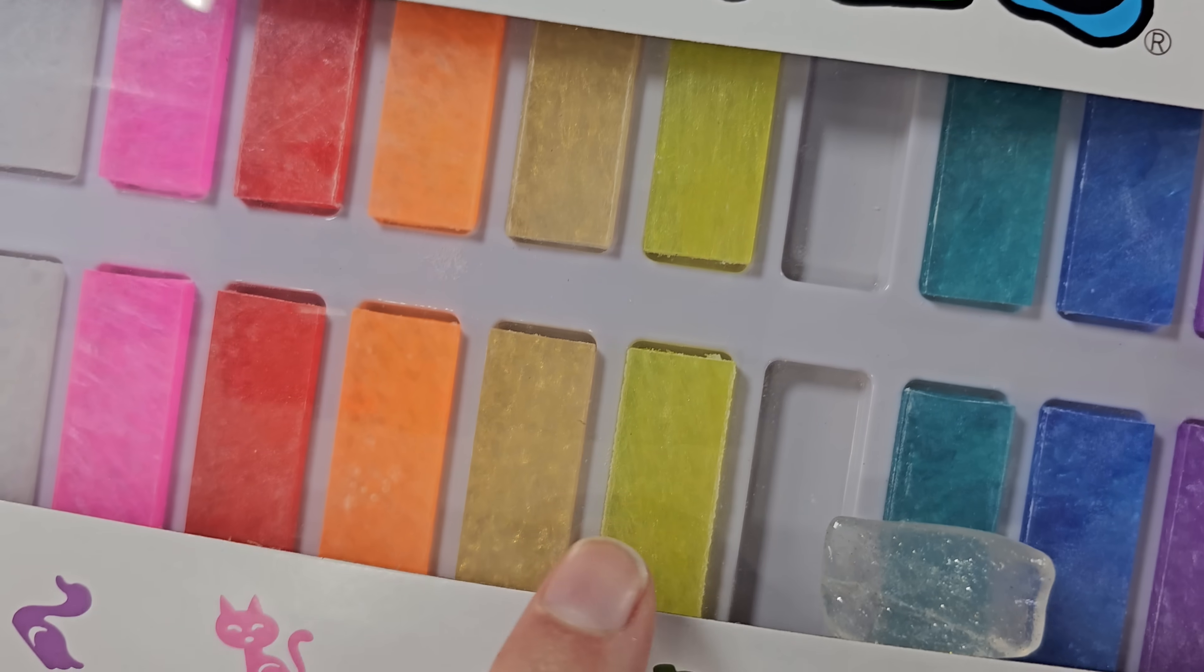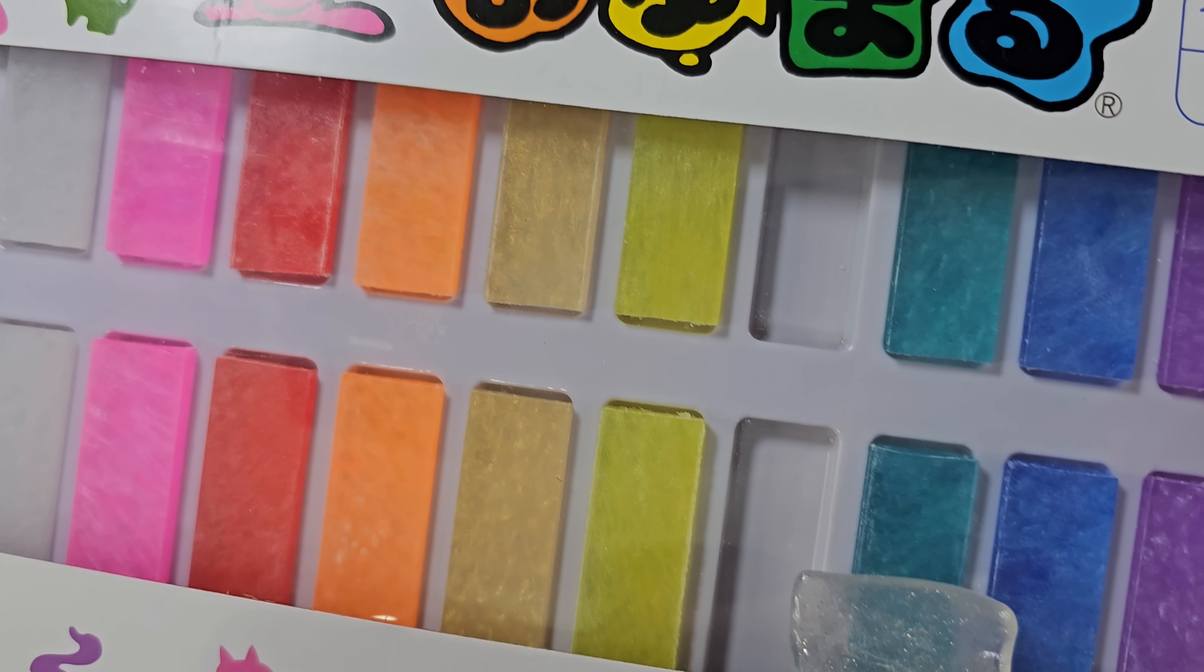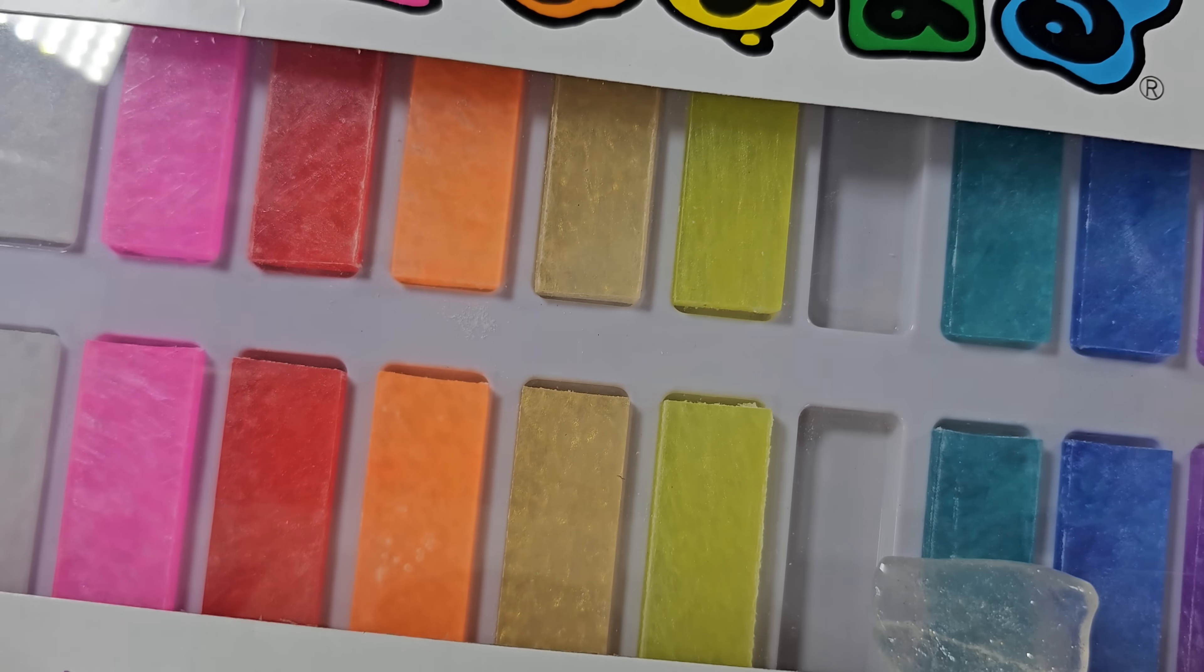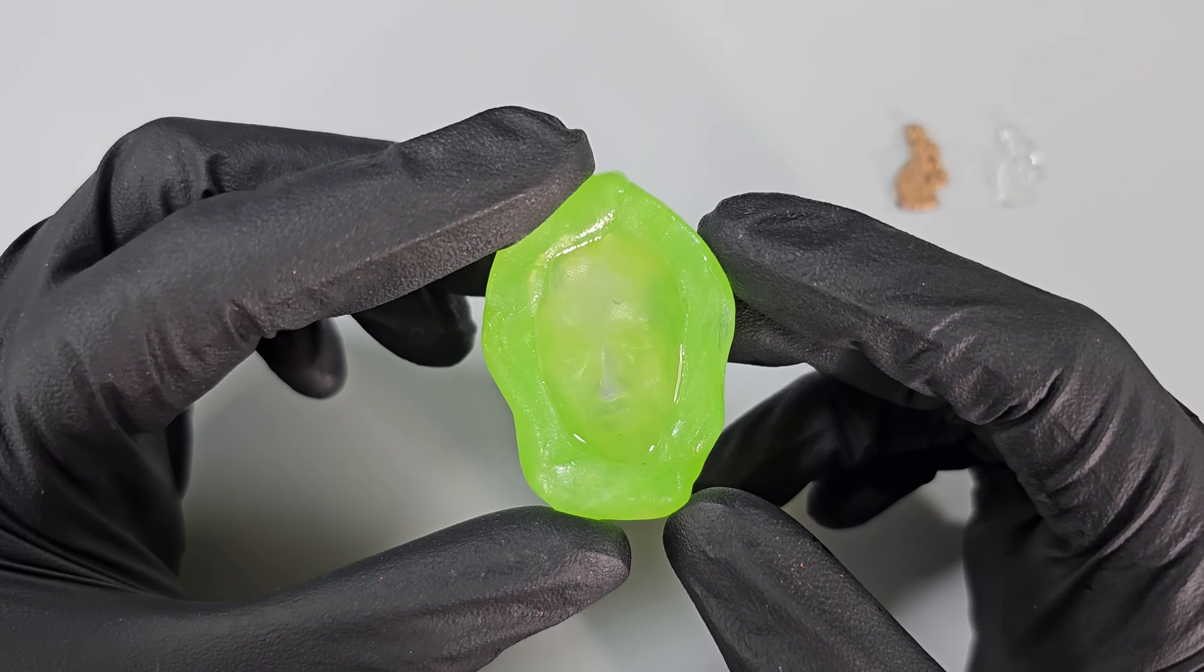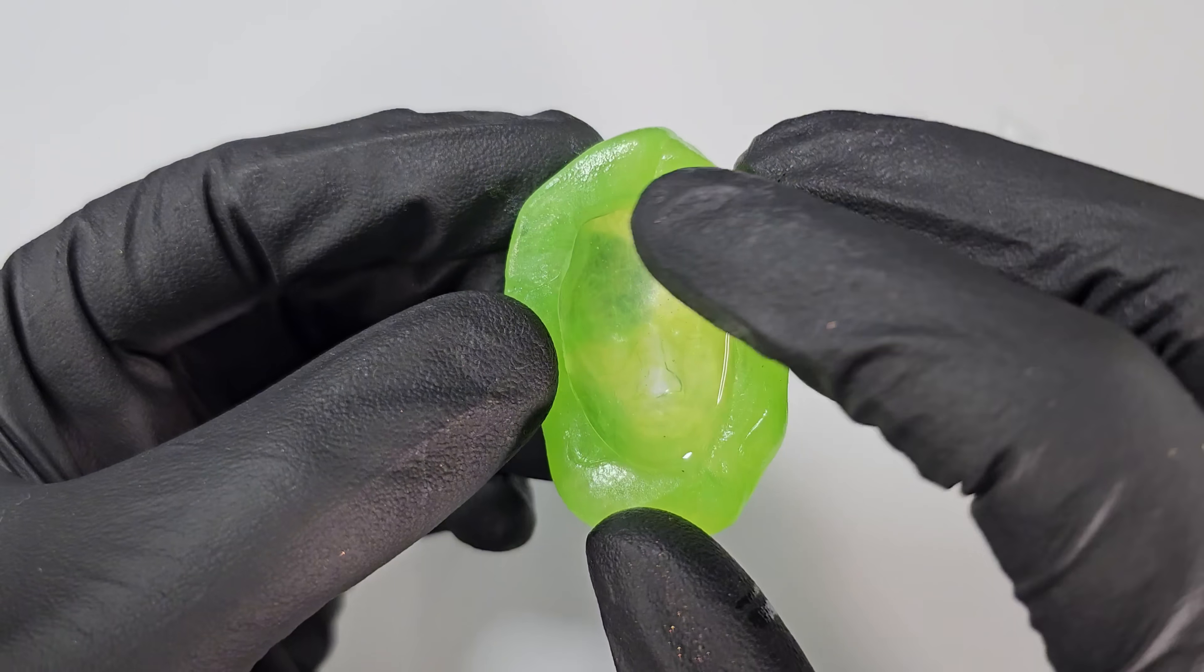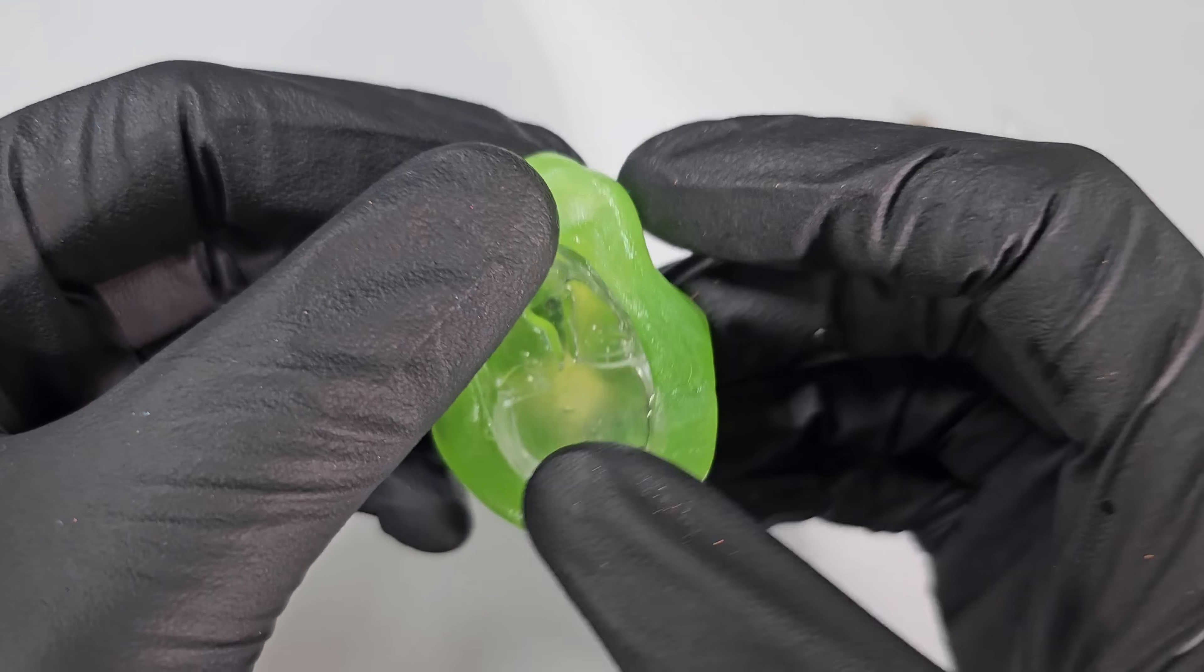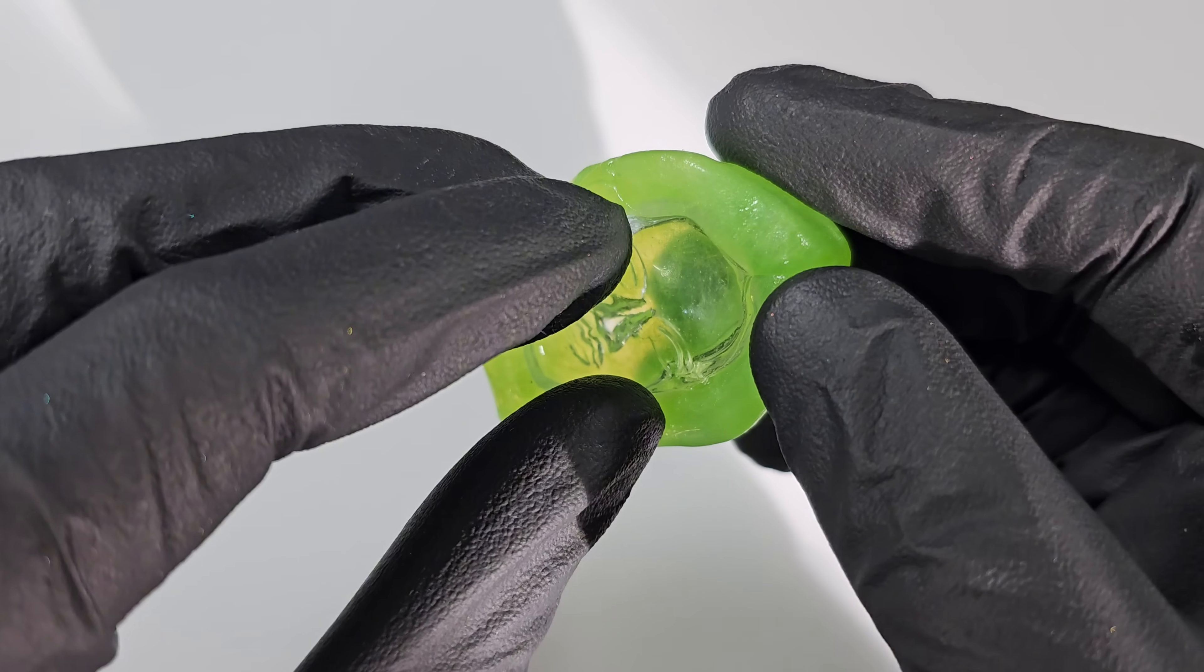So if you're going to be using this for UV resin, I'd suggest using the clear, just so the light can penetrate through. They sell this. The same company sells this in just the clear bars with no glitter, just clear. I'll pop the link for that in the description box below also.